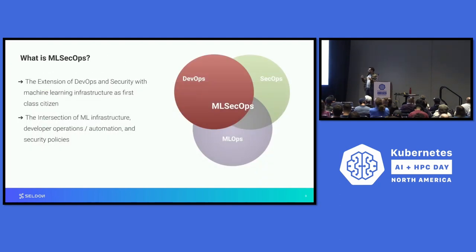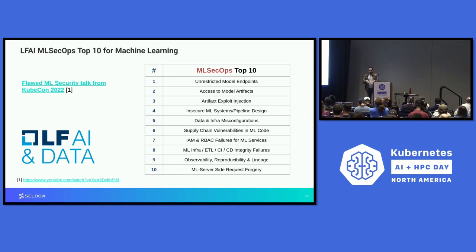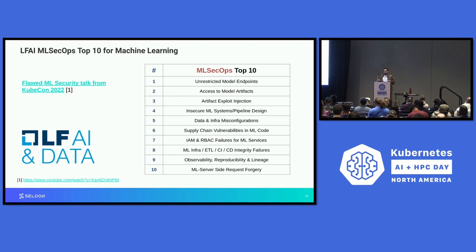This talk is focused on this nascent field of MLSecOps, which is nothing more than the extension of the standard DevSecOps to include machine learning workloads. Last year we presented a talk here at KubeCon where we covered some of the top 10 MLSecOps vulnerabilities. This list is basically something that the LFAI started working on about a year and a half ago as part of a working group on MLSecOps — to publish something similar to the OWASP top 10 for web vulnerabilities, for people to take into account when they design and build machine learning systems.